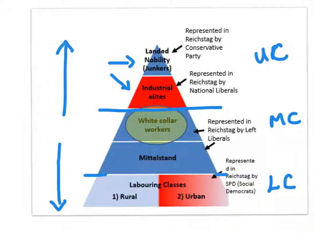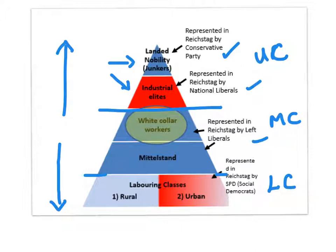That's just a representation of what society looks like, and it could apply to pretty much every single developing, industrializing country at this time. Also on the diagram — and we'll develop this more as we go through — are the different political parties that would represent those groups in parliament. You've got the Conservative Party for the upper classes, the National Liberals for the new elites, the Left Liberals for the middle classes, and effectively the Social Democrats, who represent the growing urban working classes.